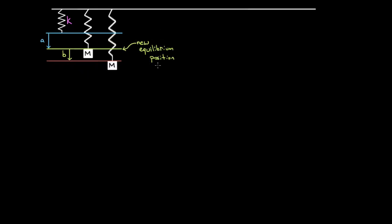The new equilibrium position is the point where the net force on the mass is zero. This time, that's not at the spring's natural length — the equilibrium position is displaced a distance A away from the spring's natural length, because it's battling the force of gravity. The spring force upward, Kx, minus the gravitational force Mg, has to equal zero. So at the equilibrium position, x equals Mg divided by K. This is what A equals — the distance the mass hangs down from the natural length of the spring is Mg over K.